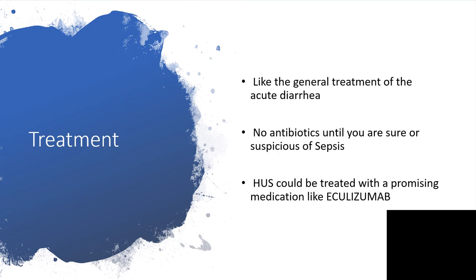Hemolytic uremic syndrome could be treated with a promising medication like eculizumab, but that is still on the way. And with that, we come to the end of this short but very significant presentation in the management of acute diarrhea — because we need to know the exact cause and prevent possible complications that may be very fatal. Thanks for listening. Please subscribe to my channel and review the videos on acute diarrhea one, two, and three.